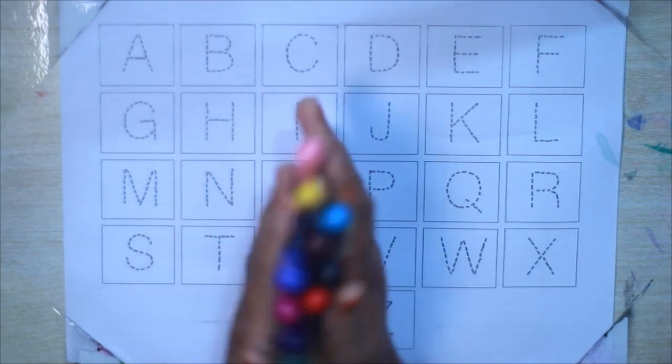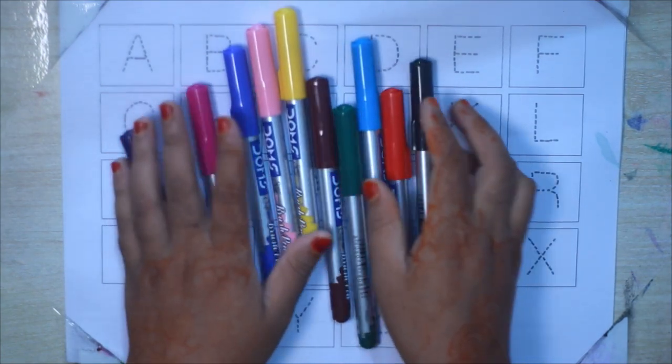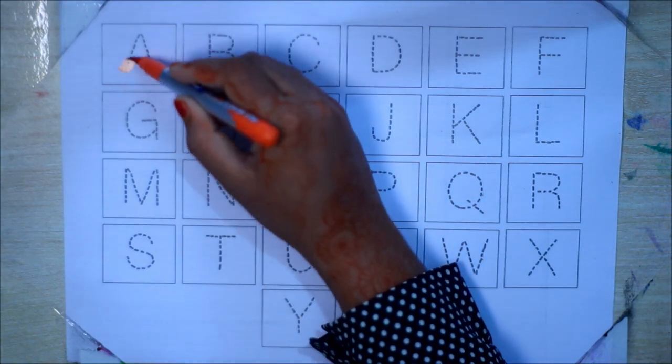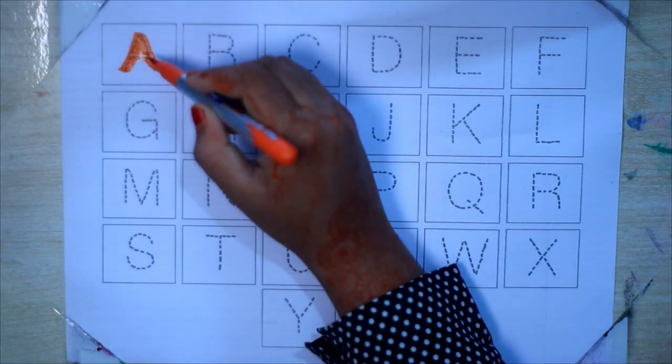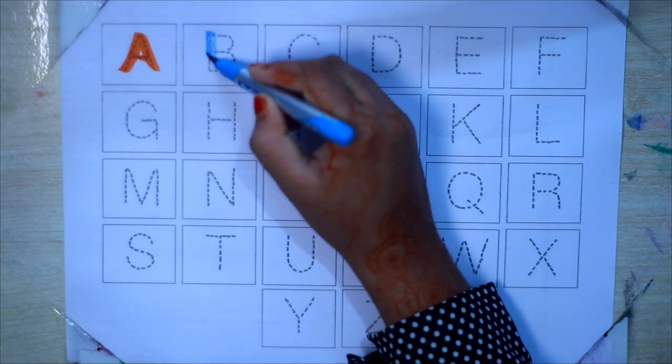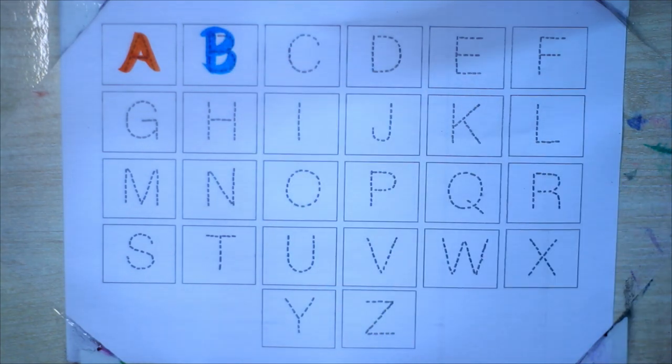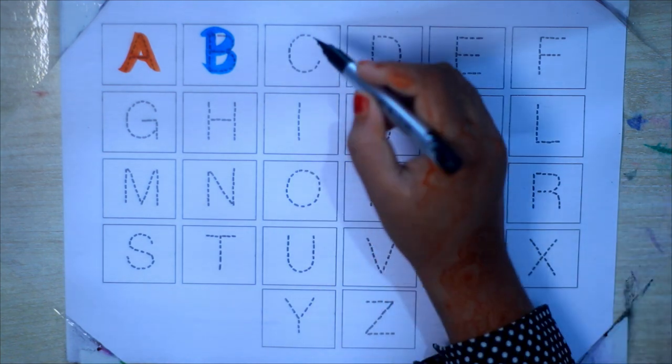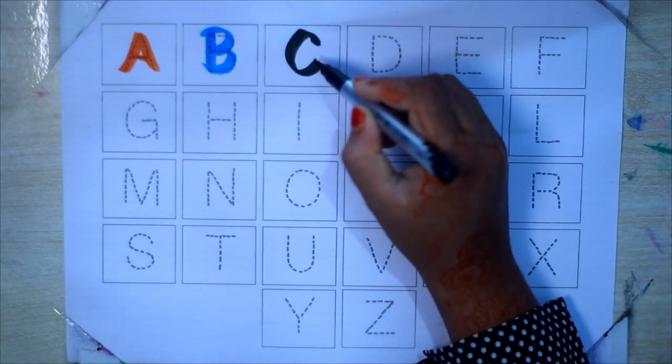Let's introduce with colors. Orange color A for Art. Sky blue color B for Bart. Black color C for Car.